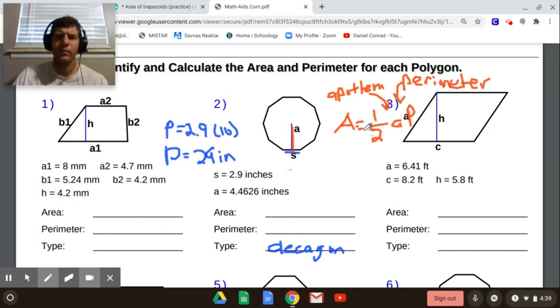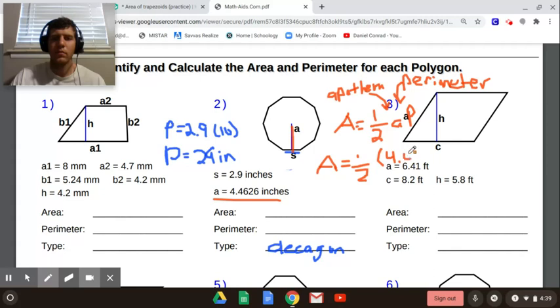So area of the polygon is 1 half times the apothem times the perimeter. In this case, we have area equals 1 half. Our apothem is 4.4626. And we found our perimeter is 29 inches. So multiply by 29. Then we can put that all in our calculator.